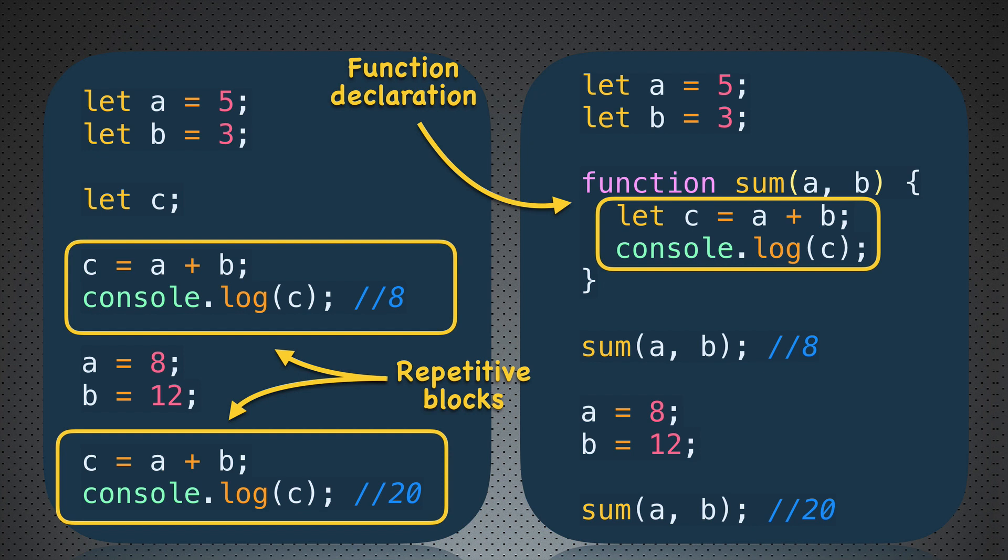Below you see the first call: sum parenthesis a comma b. On this line we call the sum function with two variables a and b. Now values of those two variables are 5 and 3, and that's why we will get 8 in the console, same as on the left pane. After that we reassign values of variables a and b—now they become 8 and 12 correspondingly. After that we will call the sum function again with the same variables a and b, and now you will see 20 in the console. That's how you can reuse a function. You can call it as many times as you want.